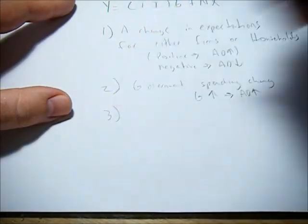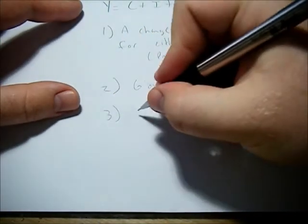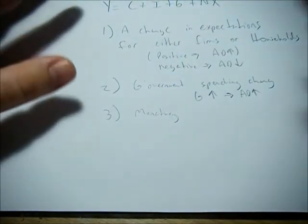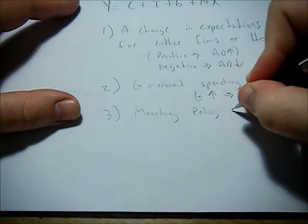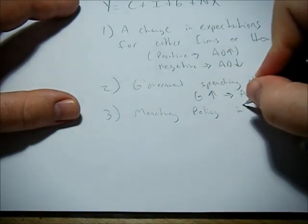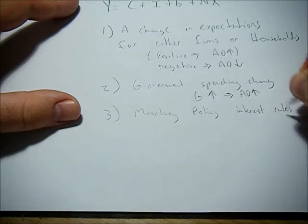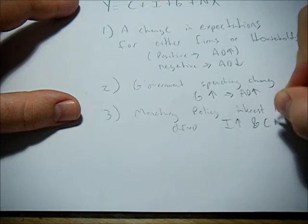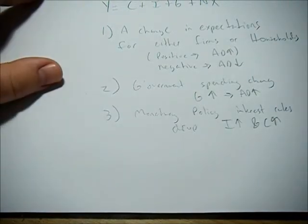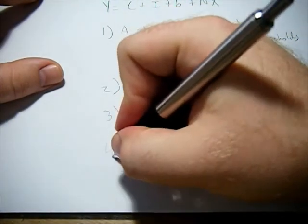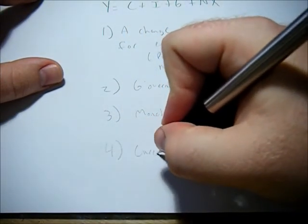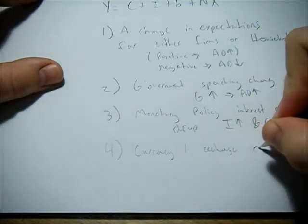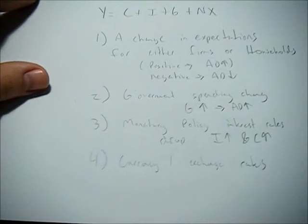Government spending change - G goes up, or fiscal policy, aggregate demand goes up. One I didn't mention before in our determinants, but also plays a role is monetary policy, and this will affect C or I. Monetary policy, if interest rates drop, I and potentially C will increase, which will increase aggregate demand. Finally, we have currency and exchange rates, which is our net exports.